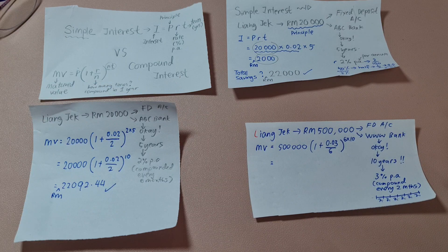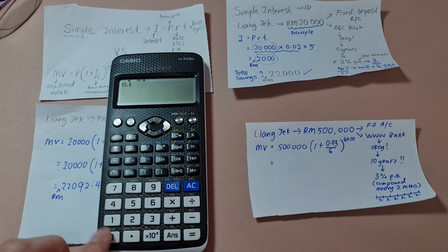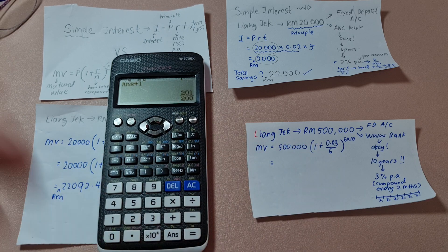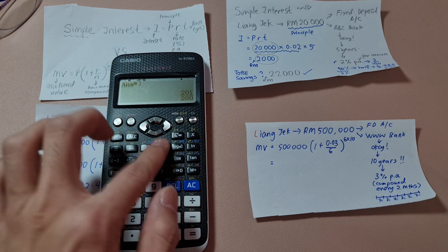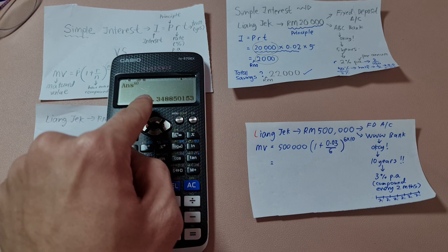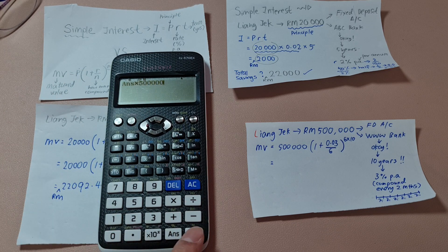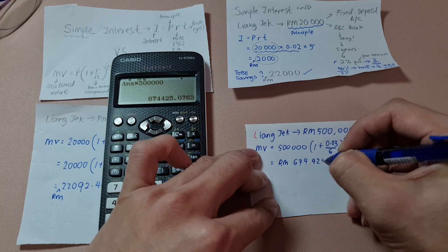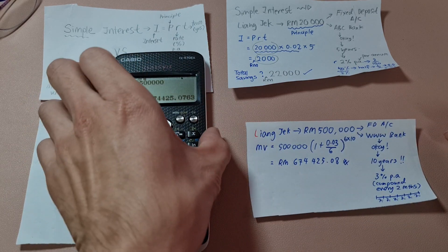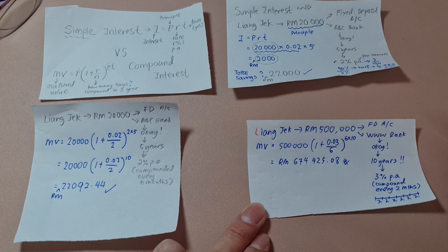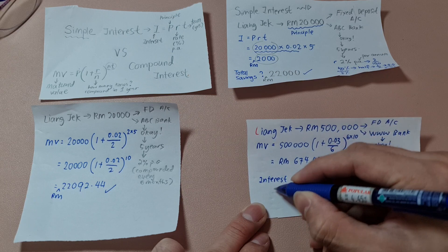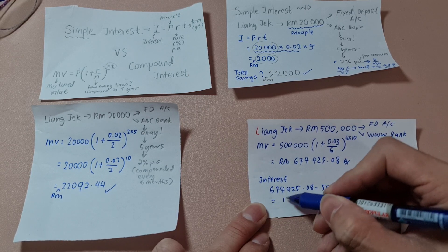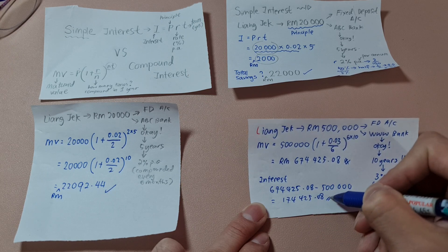That's 60 times of compounding. Now I take my calculator and press the inner part: 0.03 divide by 6, then plus 1 — don't forget this 1 — then power 60, because 6 times 10 equals 60. I get this amount, then straight times with half a million. So after 10 years, my matured value is RM 674,425.08. If I want to find the interest amount only, take 674,425.08 minus 500,000 — the interest itself is RM 174,425.08.